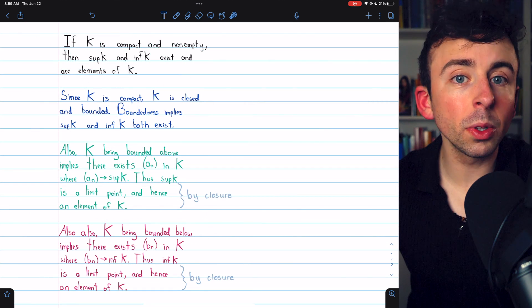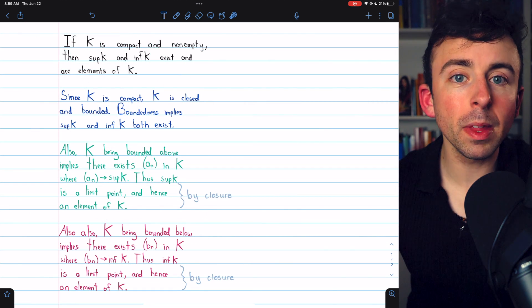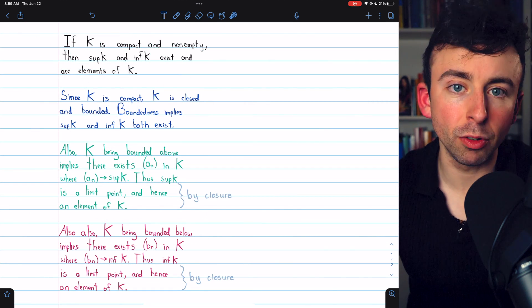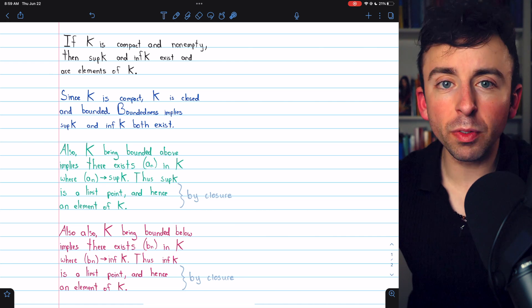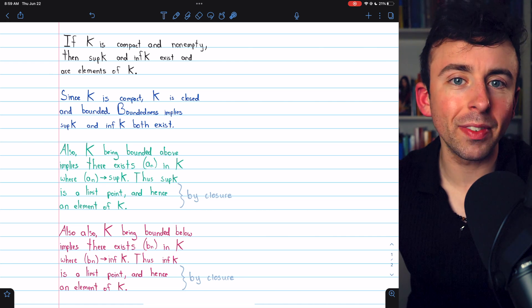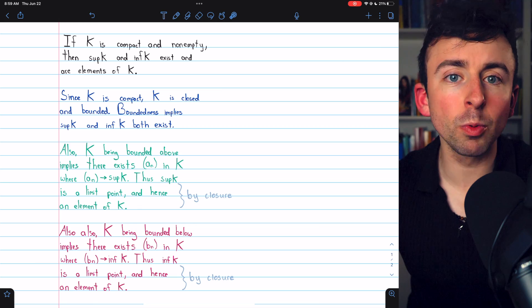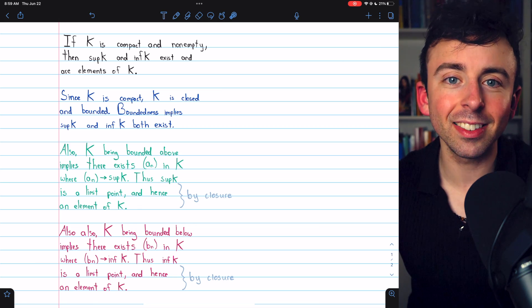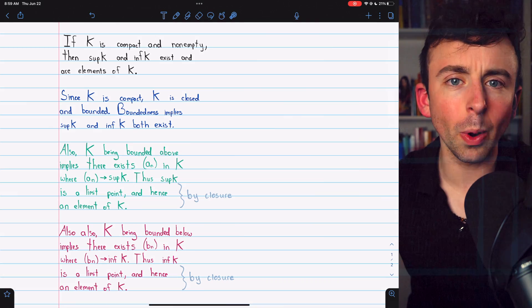So, a compact set not only has a supremum and an infimum, but it will actually contain the supremum and infimum. Hope this video was helpful. Let me know in the comments if you have any questions, and check out my Real Analysis course and Real Analysis Exercises playlists in the description for more. Thanks for watching.